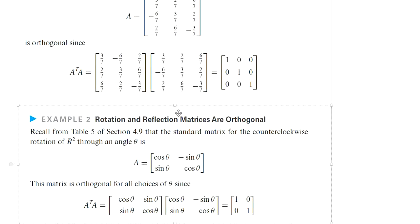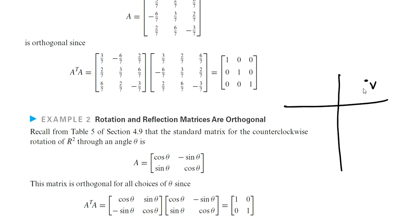For example, consider rotation of points in a plane. We have a vector here. The vector is rotated through an angle theta, giving a new vector. So if the initial vector is changed to vector u, then the new vector can be obtained by multiplying vector v with matrix A. That means we can consider Av equal to u, where A is an orthogonal matrix. We can obtain an orthogonal matrix corresponding to this transformation of rotation through an angle theta.